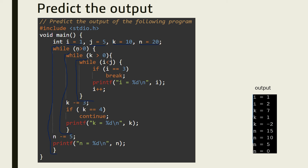Initially it will check the condition: while n greater than 0. N is 20, so this is true and it comes inside the main outer loop. Then it checks k greater than 0 — k is 10, so that condition is also satisfied. It comes inside that loop and checks the next condition: i less than j. i is initially 1 and j is initially 5, so 1 is less than 5, which is also true.